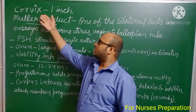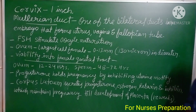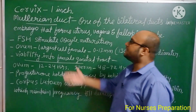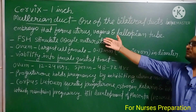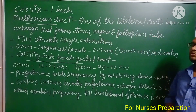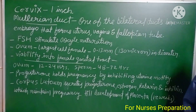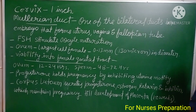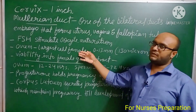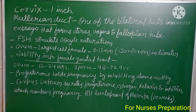The length of the cervix is approximately 1 inch or 2.5 centimeters. The Mullerian duct is a structure that forms the uterus, vagina, and fallopian tube. FSH (follicle-stimulating hormone) stimulates oocyte maturation. The ovum is the largest cell in the female body, with a diameter of 0.13 mm or 130 microns.